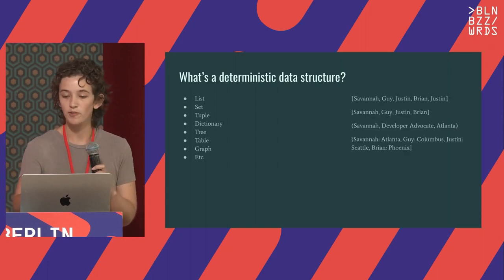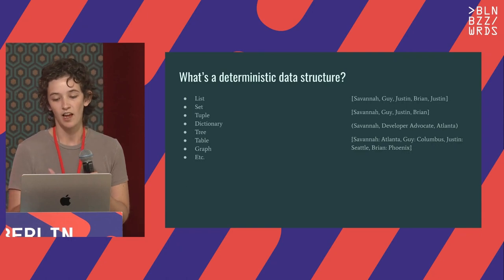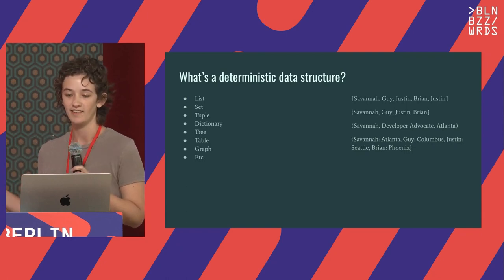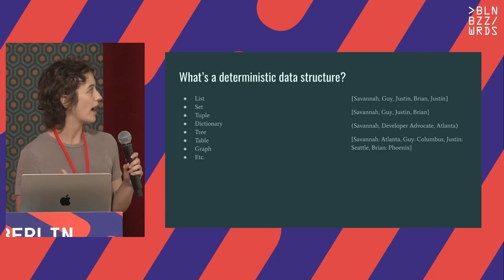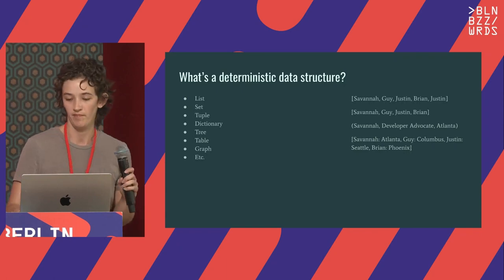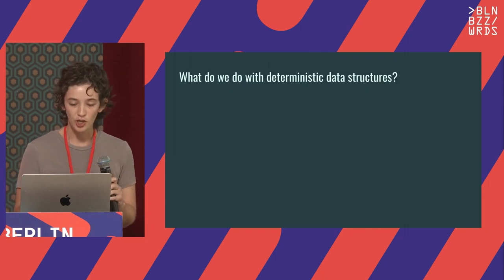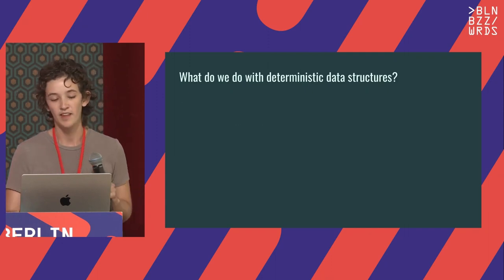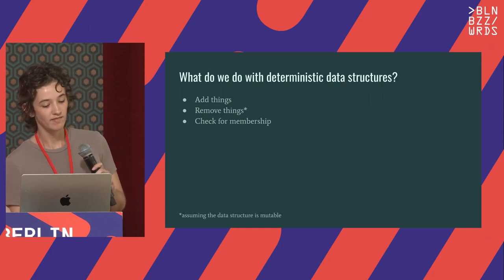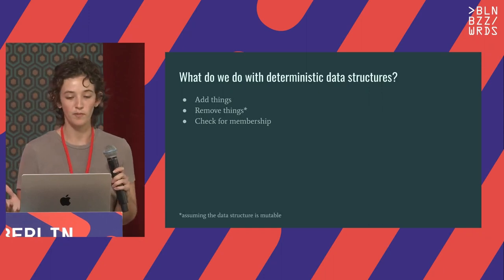Here are some examples — some of my colleagues who are also developer advocates. All that data is exactly what it says it is; there is no question about whether or not Savannah is in that list. So with deterministic data structures, we add things, remove things — assuming the data structure is mutable — and we check for membership.